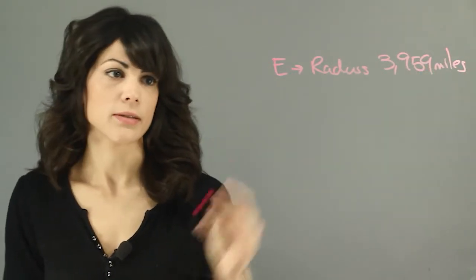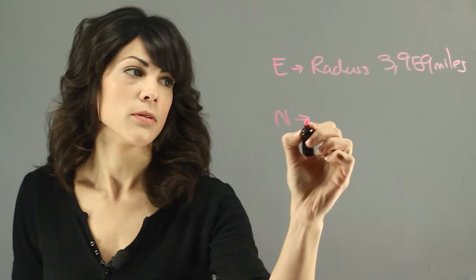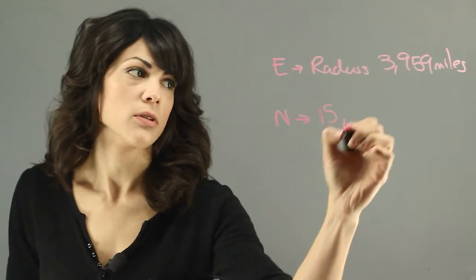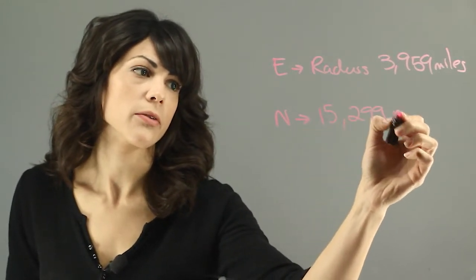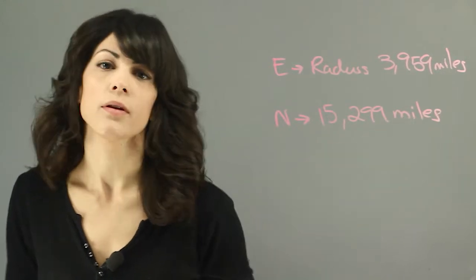How much bigger is Neptune's radius? Neptune has a radius of 15,299 miles.